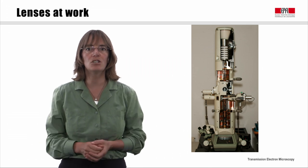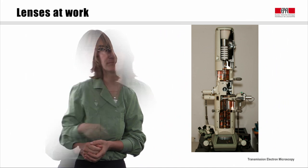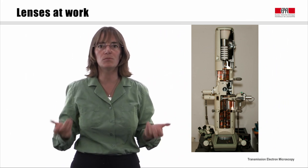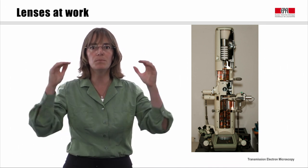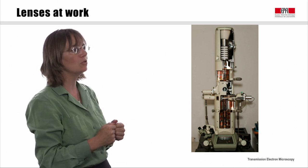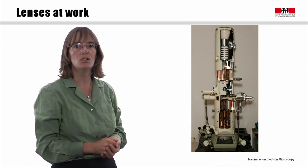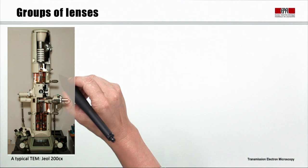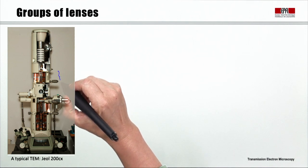Welcome to CMA's lecture on transmission electron microscopy for material sciences. In today's video, we will use the building blocks that we have seen before — the lenses — and see how we can put them together to get a working microscope with all its parts able to make the image of a specimen. There are many lenses in a microscope and they build three main groups which have different functionalities.